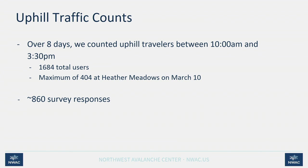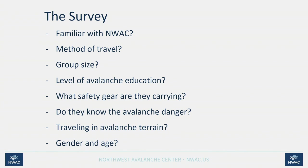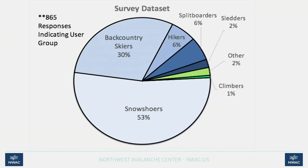The survey asked if respondents were familiar with the Avalanche Center — this was the core question, letting us determine whether our message is working and whether people familiar with us check the forecast more often and are more likely to carry beacon, probe, and shovel. We also asked about method of travel — snowshoeing, skiing, splitboarding, or other — group size, avalanche courses taken, safety gear, forecast habits, destination, and general demographics. Just over half of all users surveyed were snowshoers.